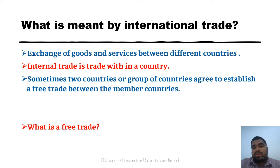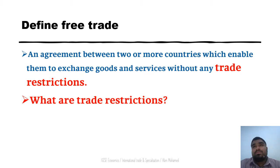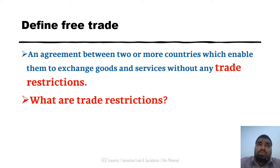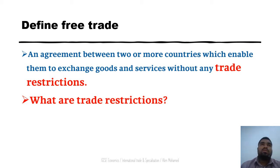Sometimes two countries or a group of countries agree to establish free trade between member countries. Free trade is an agreement between two or more countries which enables them to exchange goods and services without any trade restrictions. Trade restrictions include import duty, which is an import tax, and import quota, which physically limits imports. Most countries use protective measures to reduce imports and encourage domestic firms. The European Union is an example of a free trade area.